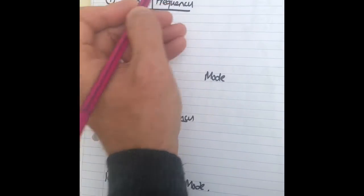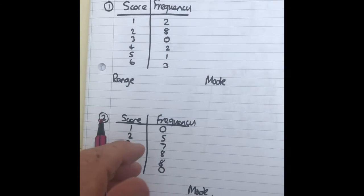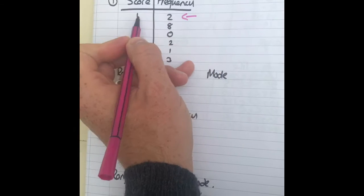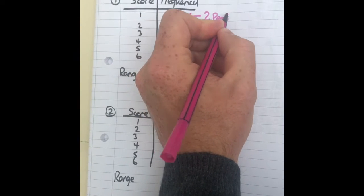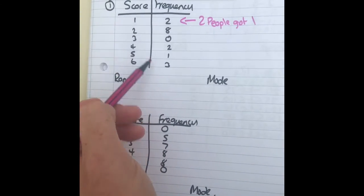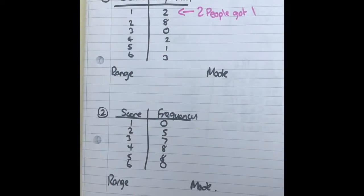In a table like this, this means that there are two people that got one. There were no people that got three, there were eight people got two, and so on.